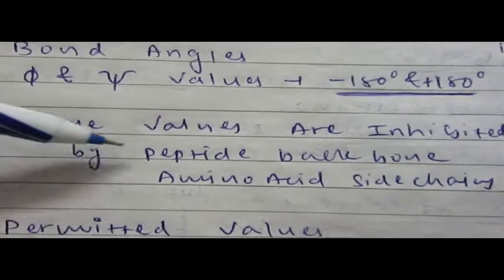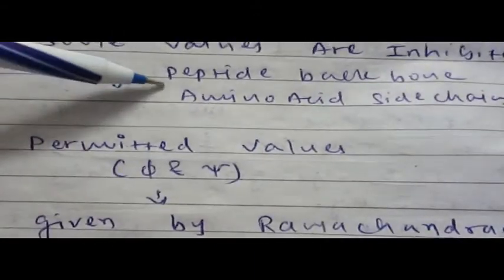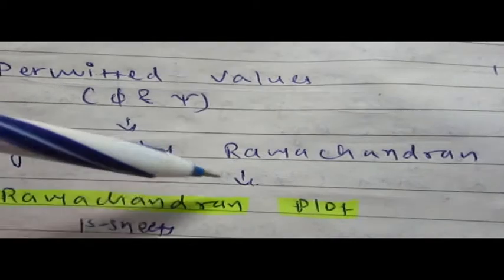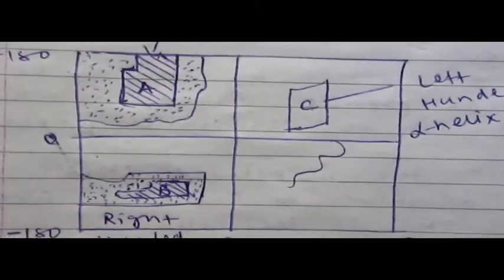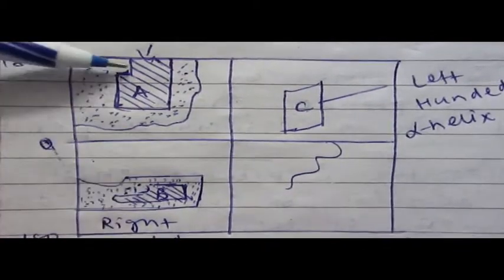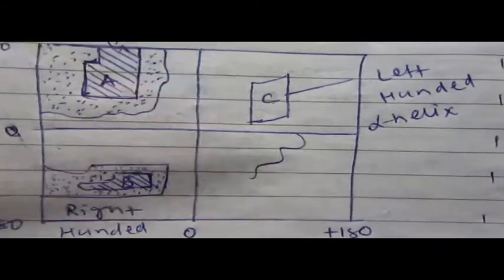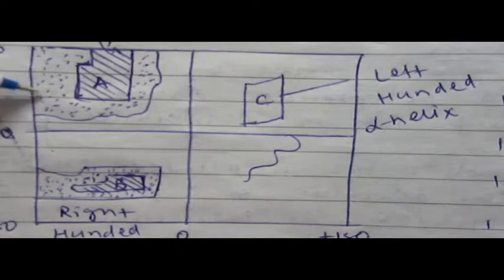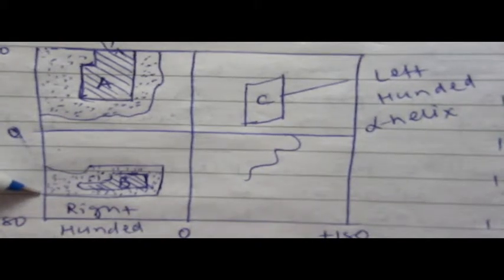The bright region named A contains beta sheets and region B contains allowed conformation of right-handed alpha helix, whereas region C contains left-handed alpha helix. The white region contains sterically disallowed conformation, whereas the less bright region nearer to A and B contains possible conformations that have chances to come into allowed or disallowed conformation.